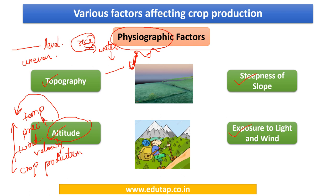Regarding steepness of slope, if a slope is very steep, rainfall causes runoff and water drains quickly, removing soil nutrients. Because of this, the soil on steep slopes loses its fertility and is no longer suitable for crop production. Similarly, exposure to light and wind also plays a significant role in affecting crop production.